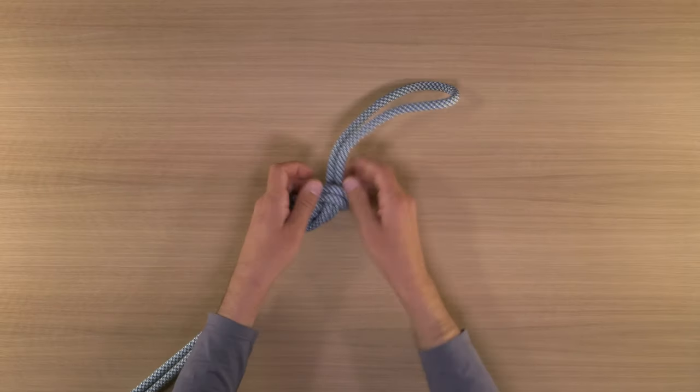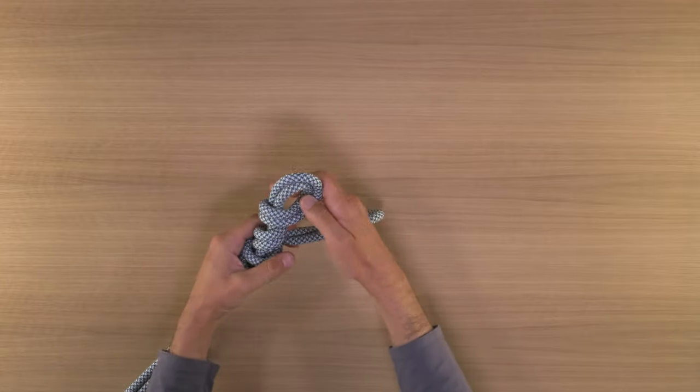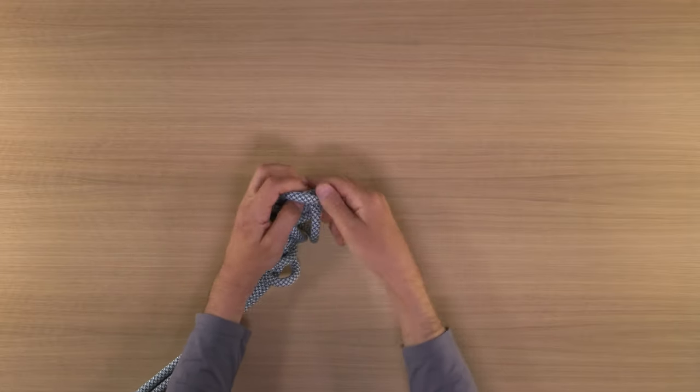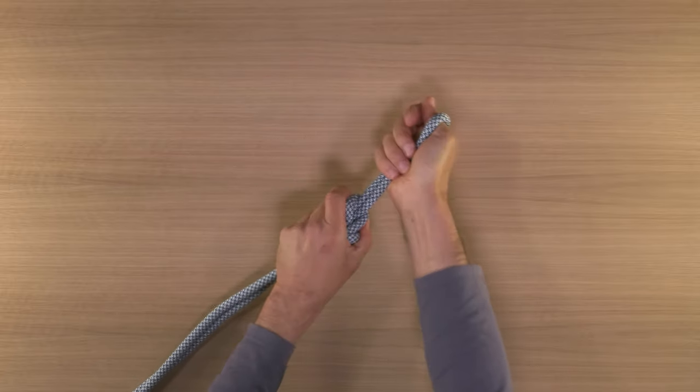That could be called a figure nine, and then if you add an additional wrap, you could call that a figure ten, I suppose. I don't think these are official names for the knots, but the idea is it's a figure eight with additional wraps.